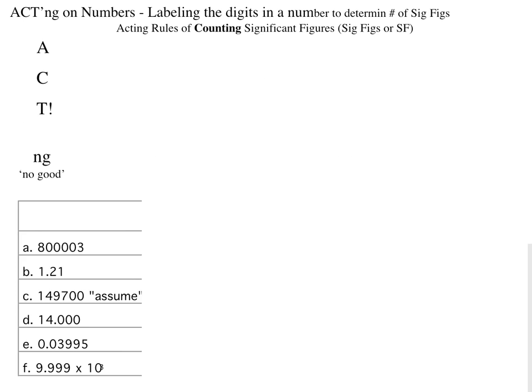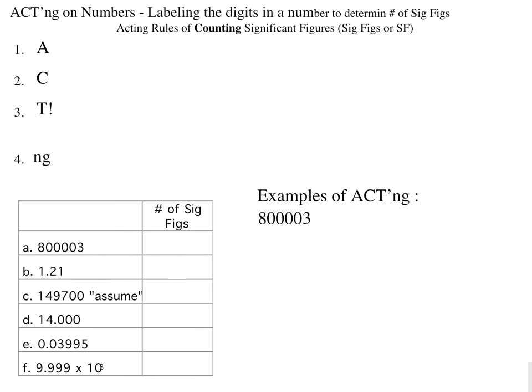So download the handout and follow along. We want to look at examples of acting. Let's consider this number, 800,003. If we act on this number, we recognize that the 8 and the 3 are non-zero digits, and the zeros in between are captive zeros.